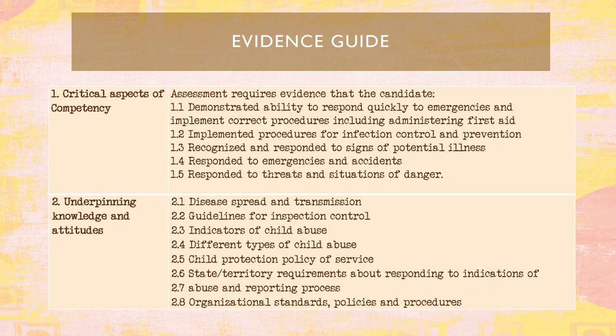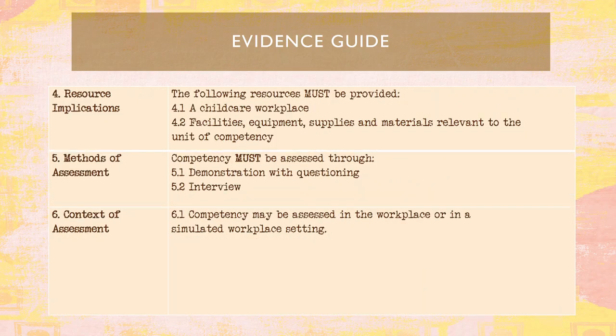We have the evidence guide and the critical aspects of competency. Assessment requires evidence that the candidate must demonstrate the ability to respond quickly to emergencies and implement correct procedures including administering first aid, implement procedures for infection control and prevention, recognize and respond to signs of potential illness, respond to emergencies and accidents, and respond to threats and situations of danger. Underpinning knowledge includes disease spread and transmission and guidance for infection control. Resource implications, methods of assessment, and context of assessment are also provided.